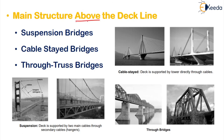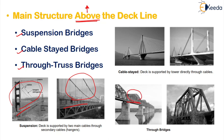The next one is bridges with the main structure above the deck line. Examples are suspension bridges, cable-stayed bridges, and through truss bridges — all these will have the main structure above your deck line. You can see here: this is your deck line, and all the main structure is above it. So suspension bridges, cable-stayed bridges, and through truss bridges are the examples.